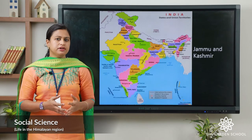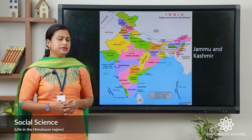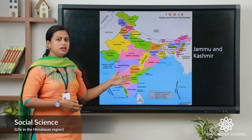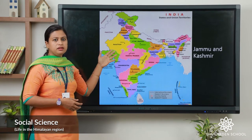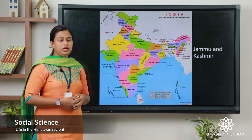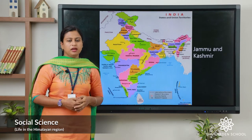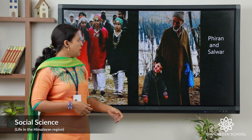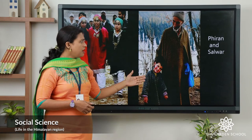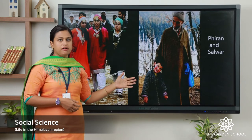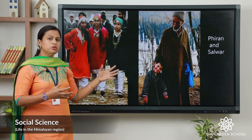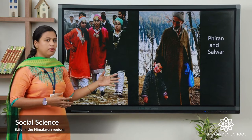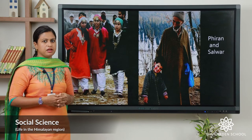The first union territory is Jammu and Kashmir. You can see it is located in the northern part of India. Here, the traditional dress are firan and salwar. Firan are the loose gowns and salwar are the loose pajamas.